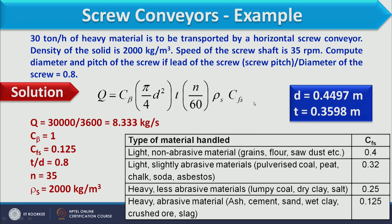We have discussed the screw conveyor, which is a very important mechanical conveyor. We have solved one example problem and discussed its advantages and disadvantages. Other mechanical conveyors like belt conveyor and bucket conveyor will be discussed in the next lecture. That is all for now, thank you.